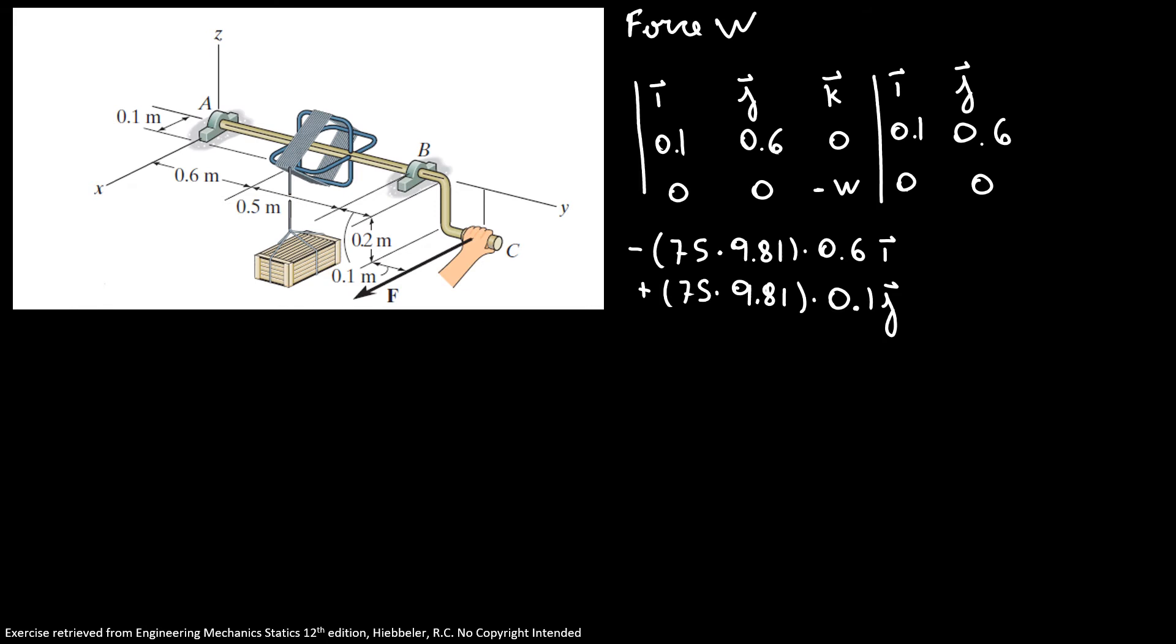For our equations of equilibrium, the sum of moments in X has to be 0, the sum of moments in Y has to be 0, and the sum of moments in Z has to be 0. Starting with the moment in X, we have 1.1BZ minus 441.45 equals 0. So BZ equals 401 N.